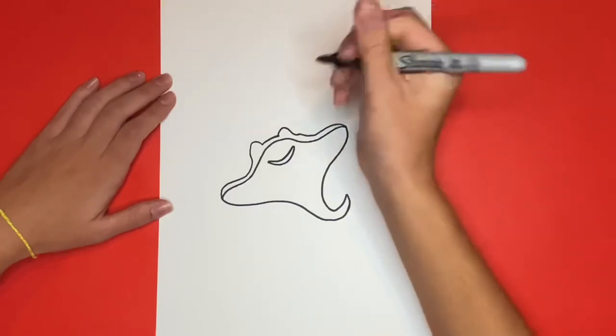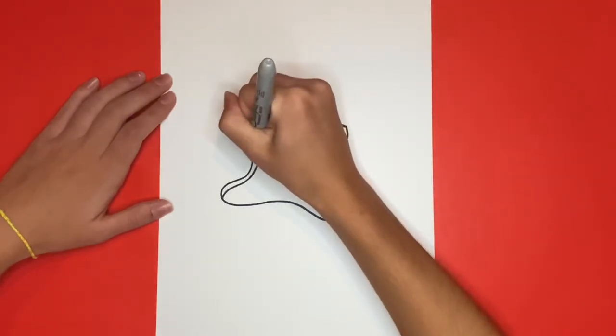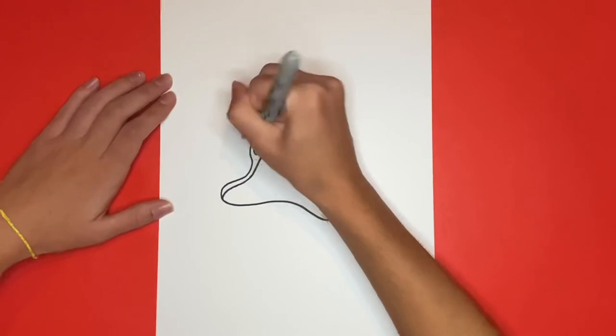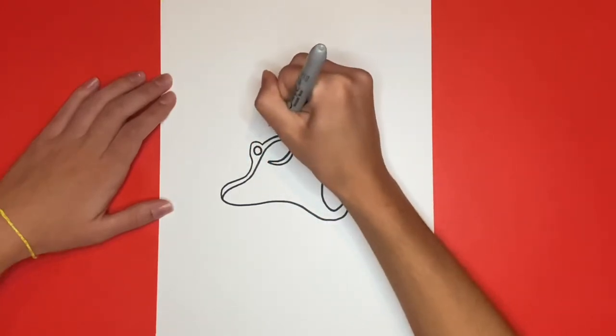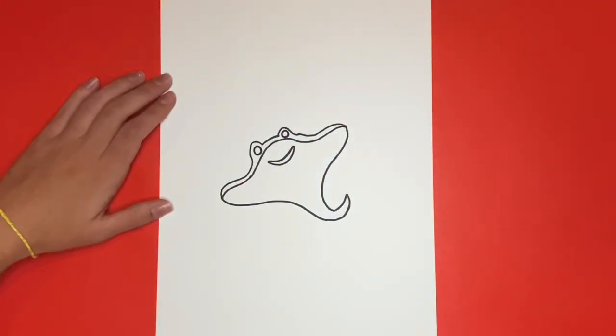Now lastly we're going to go ahead and draw our stingray's eyes. We're going to draw two circles in the spaces above that curvy line in the middle. Then we're going to draw the pupils.